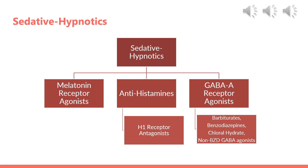This chapter will focus on structure-activity relationships and pharmacodynamics of these agents, including barbiturates, benzodiazepines, non-benzodiazepine GABA-A agonists, melatonin receptor agonists, and histamine H1 receptor antagonists.